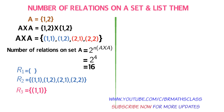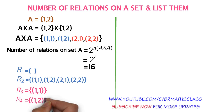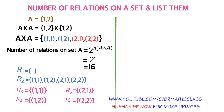R3 equals {(1,1)} — it contains only one element, ordered pair (1,1). R3 is a subset of A×A, so R3 is a relation on A. Similarly, R4 is the set containing only ordered pair (1,2), so R4 is a relation on set A. R5 contains only ordered pair (2,1), so R5 is a relation on A. R6 contains single element (2,2), so R6 is also a relation on A.